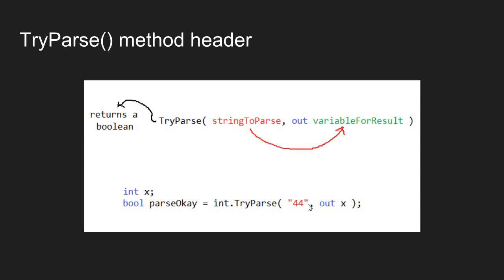I'm calling the TryParse method, passing in the string of characters for 44, and trying to get the integer value 44 out, saving the result in variable x. When calling this method, I have to type the keyword out in front of the variable being passed. If the parse is successful, x will get the numeric value 44 and parseOK will get true. If I typed in 44x, a string that cannot parse into an int, x gets assigned 0 by default and parseOK holds false.